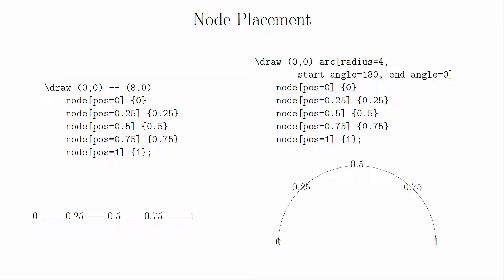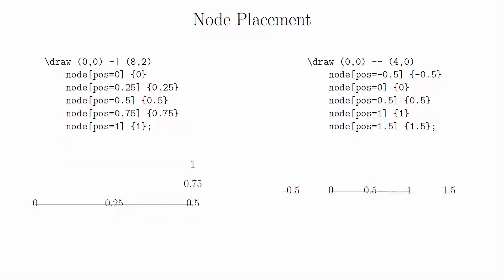There are also some extra options for the placement of nodes along a path. The position equals value command lets you specify where along the previous path you want to place the node. The value 0 corresponds to the first coordinate, and the value 1 corresponds to the second coordinate. For the double dash and arch, you can think of this as a linear progression. However, if you use orthogonal paths, the value 0.5 corresponds to the corner, and so the speed along the two paths may not be equal.